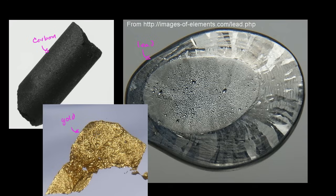But we also know that there are certain types of air particles. And depending on what type you're looking at — whether it is carbon, oxygen, or nitrogen — those seem to have different properties. Or there are other things that can be liquid. If you raise the temperature high enough on gold or lead, you could get a liquid.